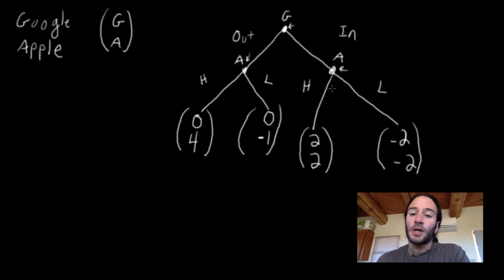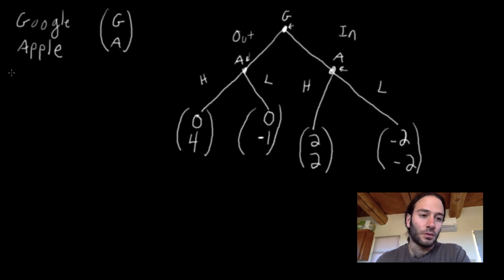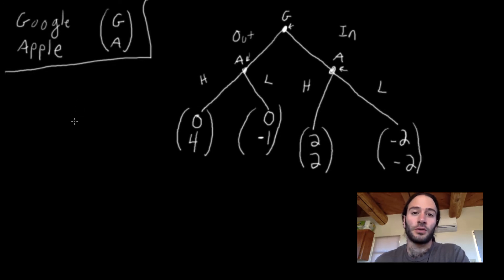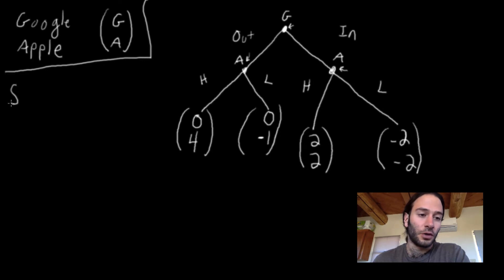Before we talk about solving this game, let's write out the strategies. What is a strategy for Google? Remember, a strategy specifies what a player would do at each of its decision nodes. Google only has one decision node, so the strategy for Google, SG, is either 'in' or 'out'.